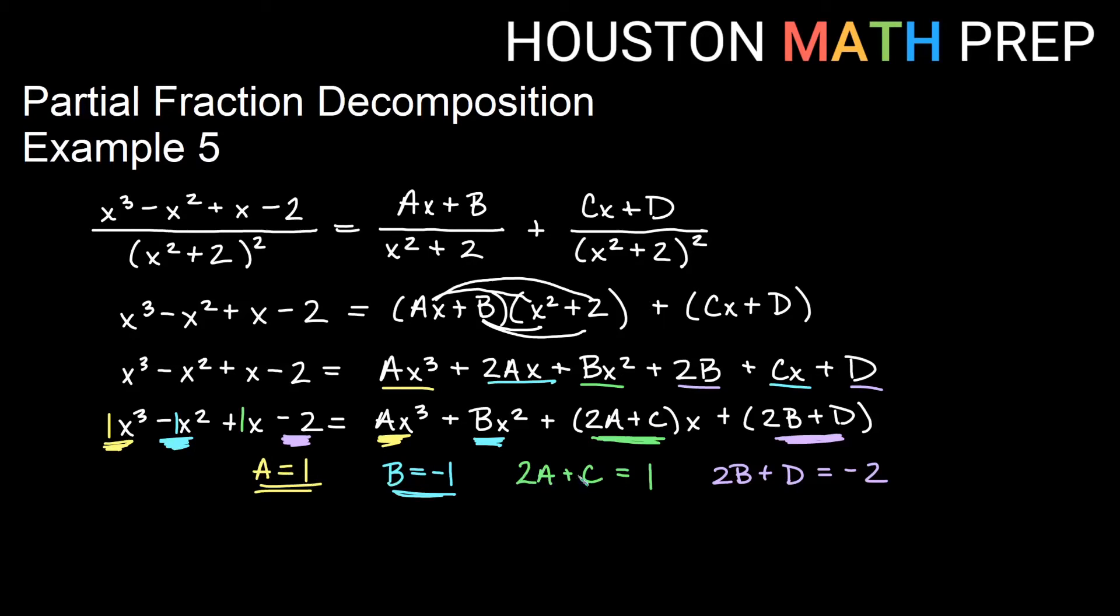So if I plug in a is 1 into this 2a plus c, that would give me 2 plus c is equal to 1. Subtracting 2 on both sides, that will give me c is negative 1. So that one's good to go.